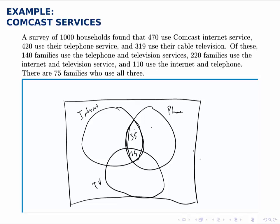Similarly, for the intersection of telephone and TV, there are 140 families. We've already accounted for 75, which means there are 65 unaccounted for — 140 minus 75. Then for internet and TV, there are 220 families in that intersection. We take 220 minus 75 and get 145.